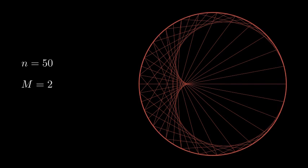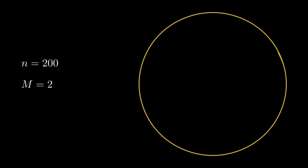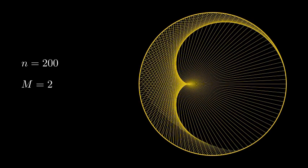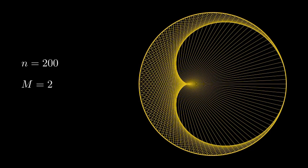It's called a cardioid, due to the heart shape. And as we increase n further, we can see that this curve becomes even more well-defined.